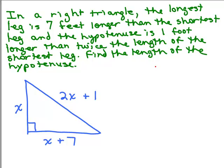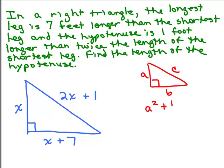Now we have to remember the Pythagorean theorem. If you have a right triangle and label the legs a and b, and the hypotenuse c, then a squared plus b squared equals c squared — or equivalently, c squared equals a squared plus b squared. If you take the hypotenuse and square it, you get the same thing as the sum of the squares of each leg.